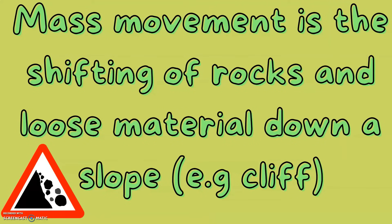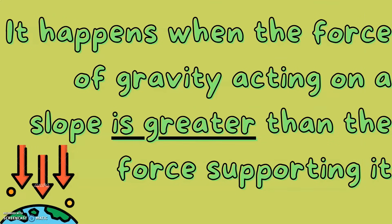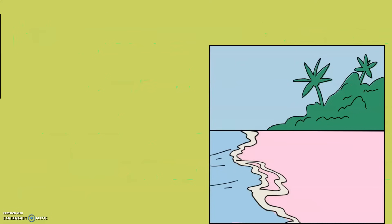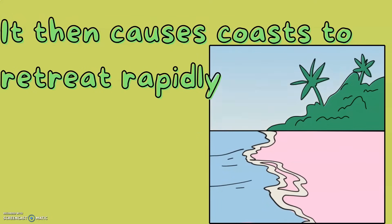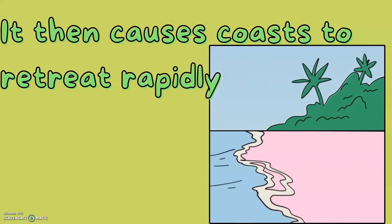What is mass movement? Mass movement is the shifting of rocks and loose material down a slope, for example a cliff. It happens when the force of gravity acting on a slope is greater than the force supporting it, and it causes coasts to retreat rapidly.